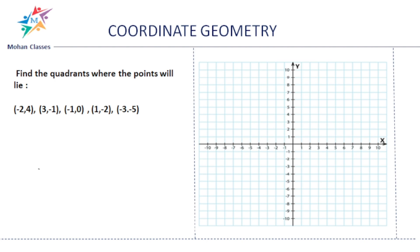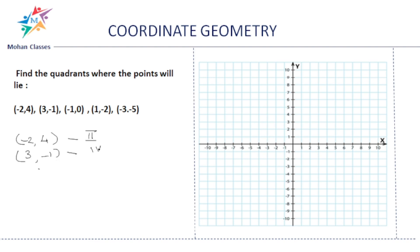Now, find the quadrants where the following points will lie. For (−2, 4): x is negative and y is positive — that is minus, plus — so it comes in the second quadrant. For (3, −1): x is positive and y is negative — plus, minus — so it comes in the fourth quadrant.